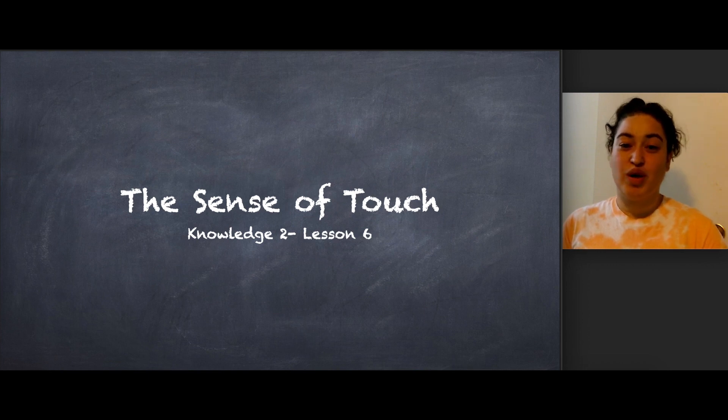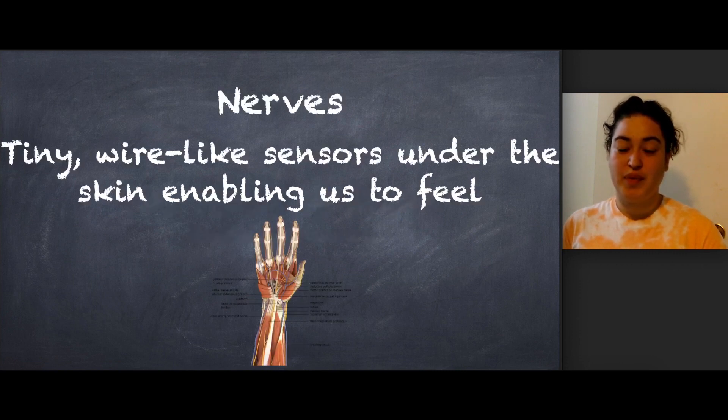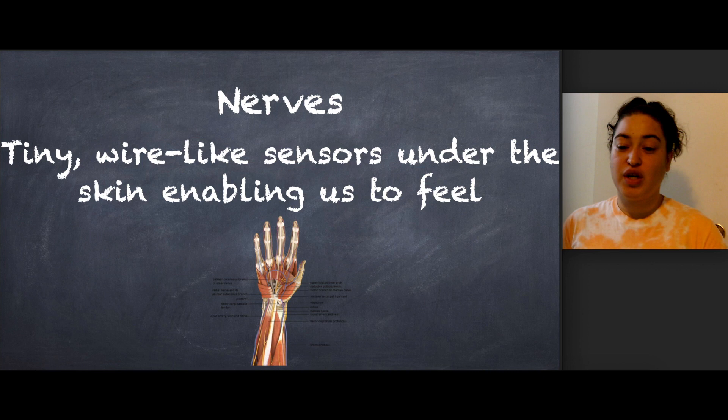In today's lesson, we are going to learn about the last of the five senses, the sense of touch. Let's go over some vocabulary. Our first word is nerves. Nerves are tiny wire-like sensors under the skin enabling us to feel.